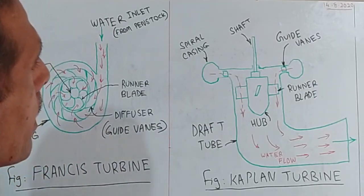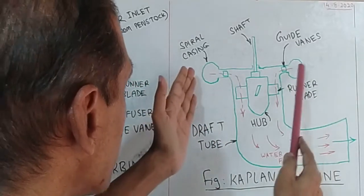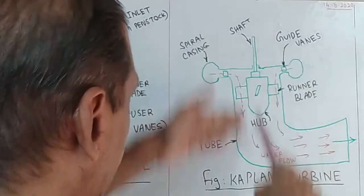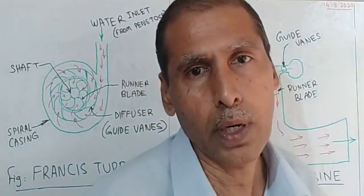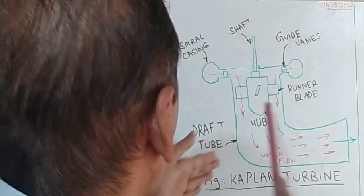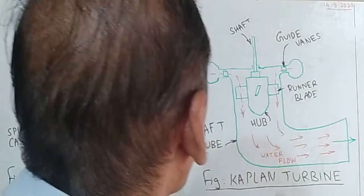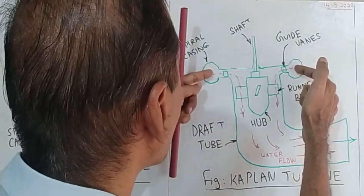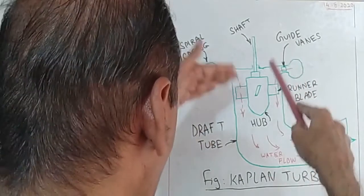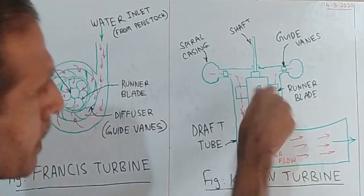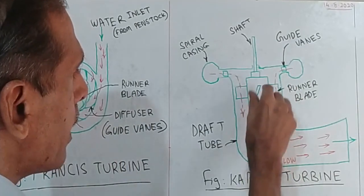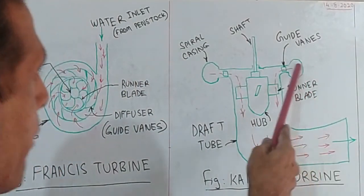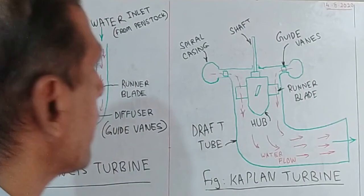In the spiral casing, the first gate vane directs flow in the axial direction — that is, parallel to the axis. This makes it an axial flow turbine. The runner blade is controlled by the gate vane. The gate vane is fixed, while the runner blade is twisted in a ship-like blade shape.